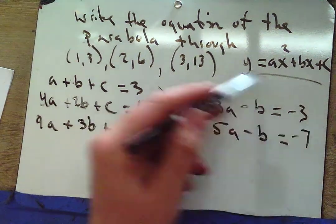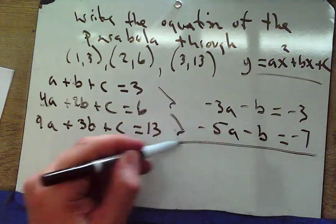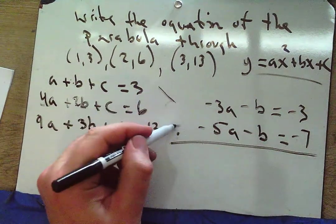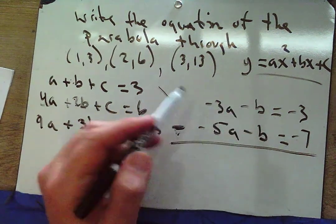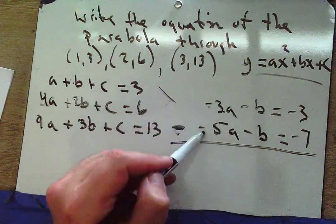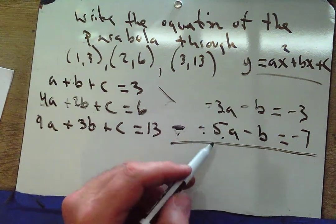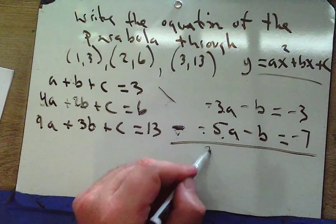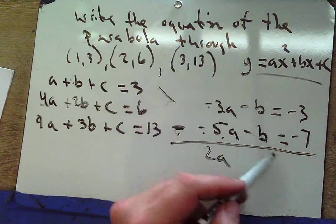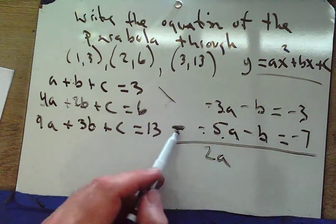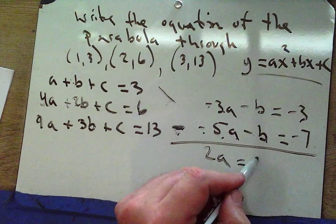Taking equations two and three and subtracting: 2b minus 3b is negative b, 4a minus 9a is negative 5a, and 6 minus 13 is negative 7. Now subtracting these two resulting equations: negative 3a minus negative 5a is 2a, and negative 3 minus negative 7 is 4.